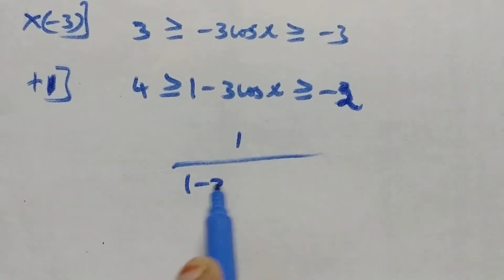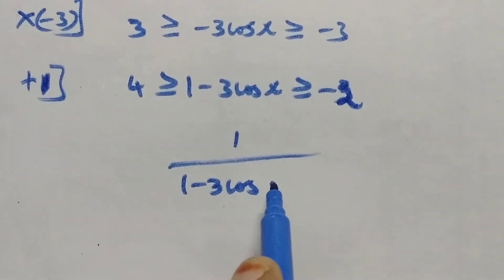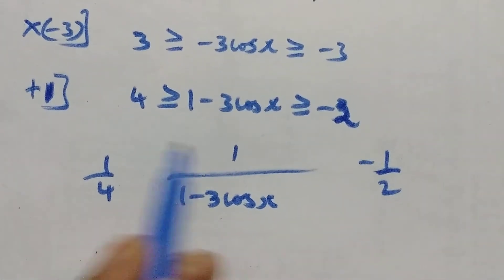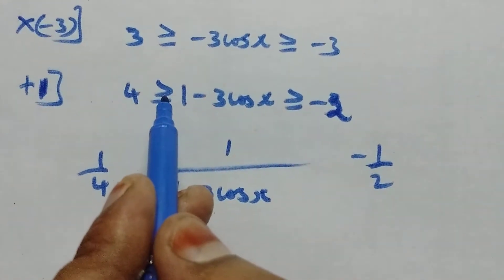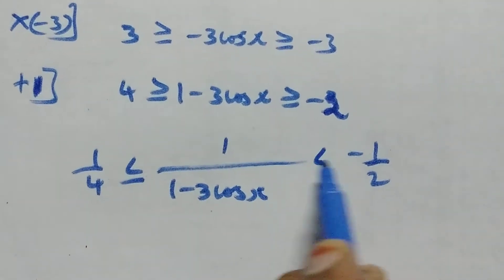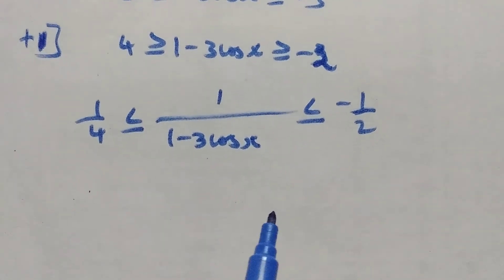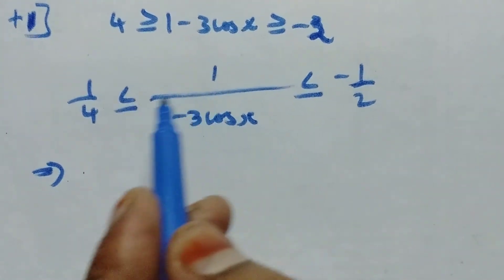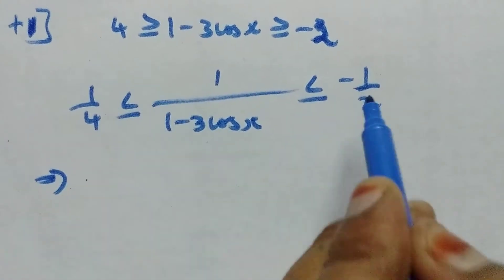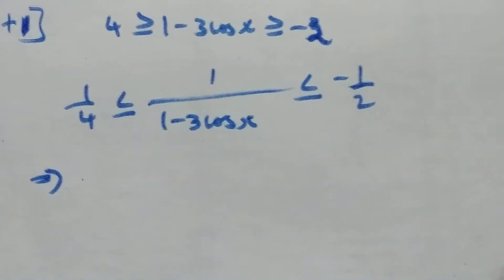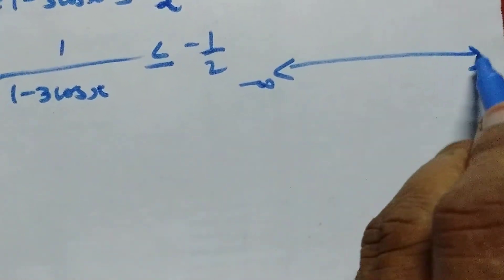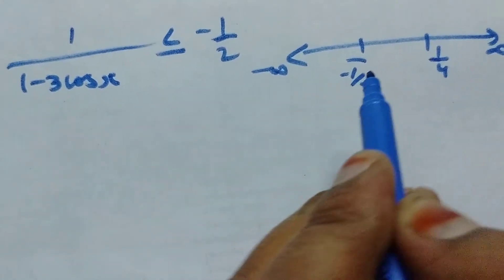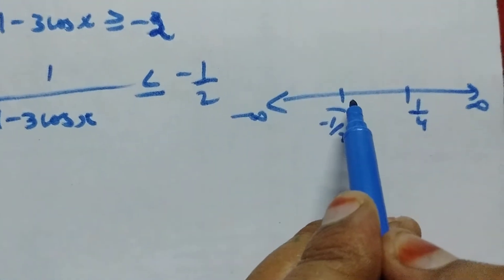Now taking the reciprocal 1 / (1 - 3 cos x): since the expression can be negative or positive, we get values ≤ -1/2 or ≥ 1/4. So the range includes (-∞, -1/2] and [1/4, +∞).